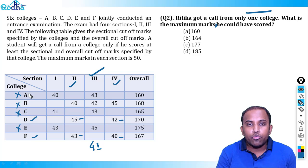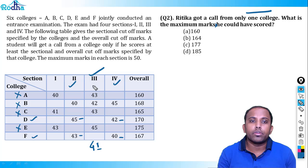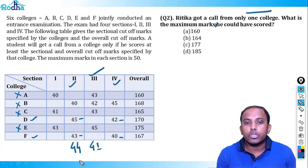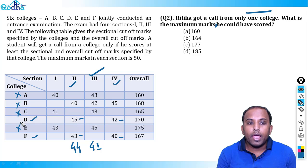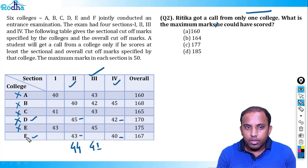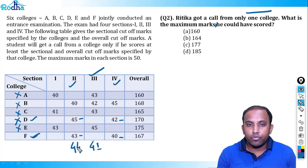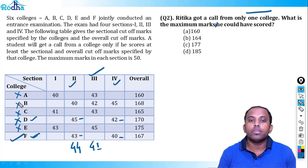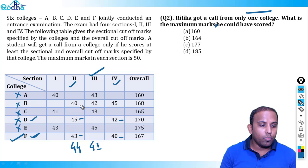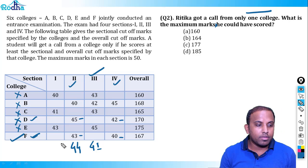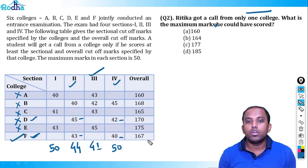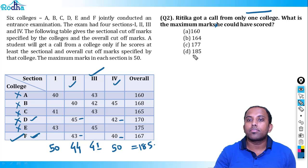She is already eliminated from four colleges. I eliminate her from one more (D) by scoring 44 in section 2, while she still gets selected from F. So with 41 in section 3 and 44 in section 2, she gets a call from only F. Now to maximize total marks: section 1 gets 50 marks, section 4 gets 50 marks. Total: 50 + 44 + 41 + 50 = 185. That is the answer.